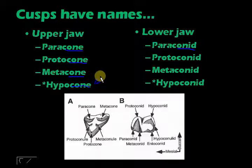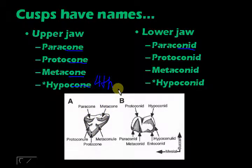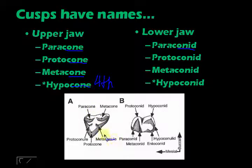The hypocone is actually the fourth cusp. In this example we have just three cusps, which is your primitive insectivorous tooth. It's important that you know the cusps have names. Aside from 'cone,' if you have smaller cones they are called 'conules' if on the upper jaw, and 'conulids' if they are in the lower jaw.